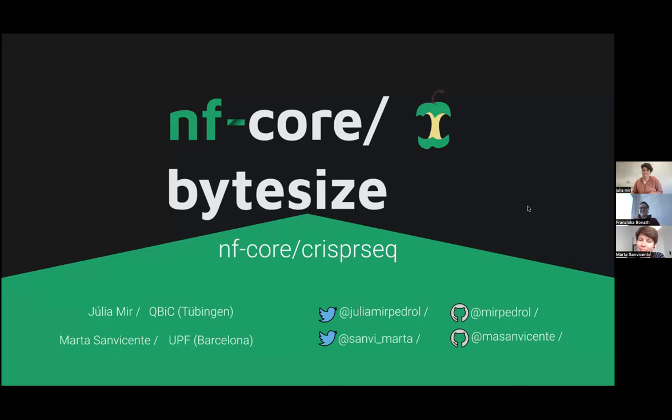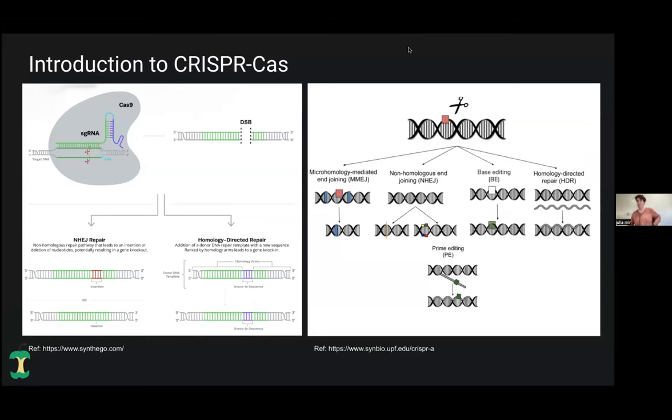Thank you. Thanks for the introduction. So we will present NF-Core CRISPR-SEC, which is a pipeline for the analysis of CRISPR experiments. I would like to start by an introduction to what CRISPR is. This comes from bacteria and the system is repurposed to do gene editing. It consists of a protein that we call Cas and this protein can cut DNA creating double strand breaks. Then it's coupled to a single guide RNA, which is a short sequence of RNA which is complementary to the DNA region that you want to cut.